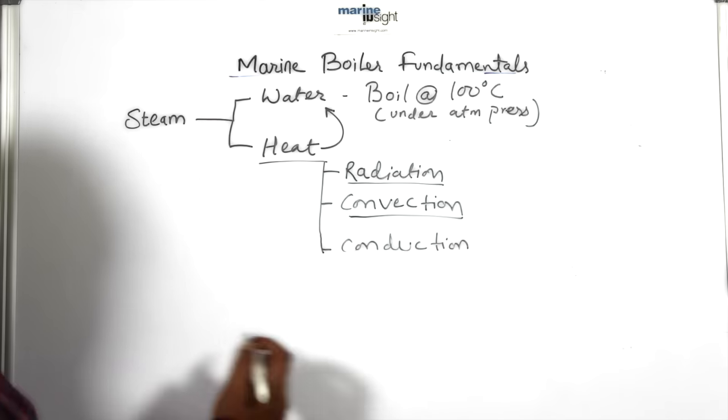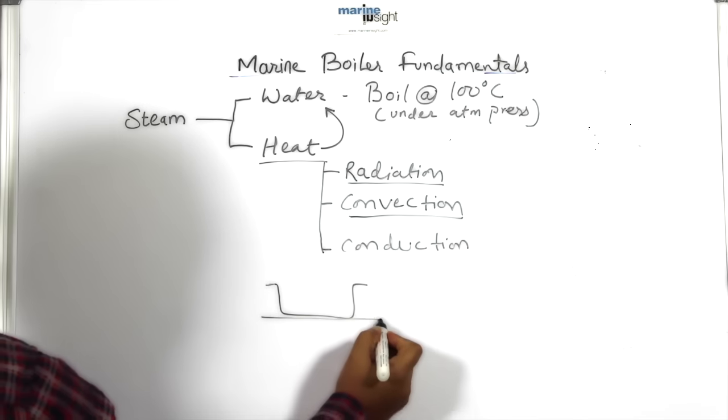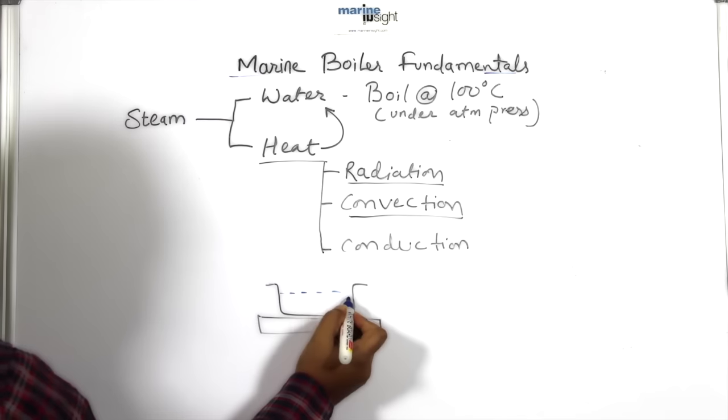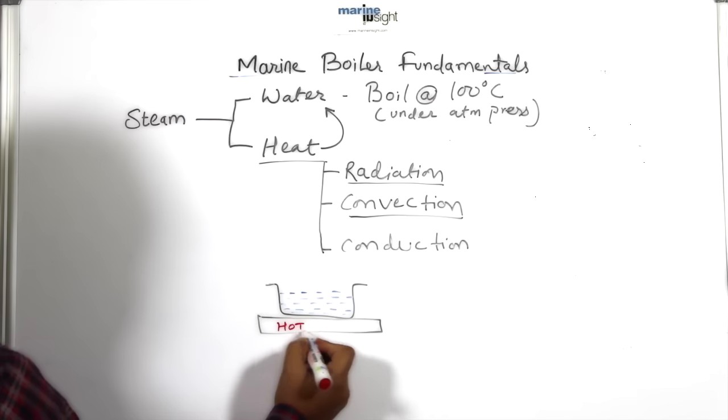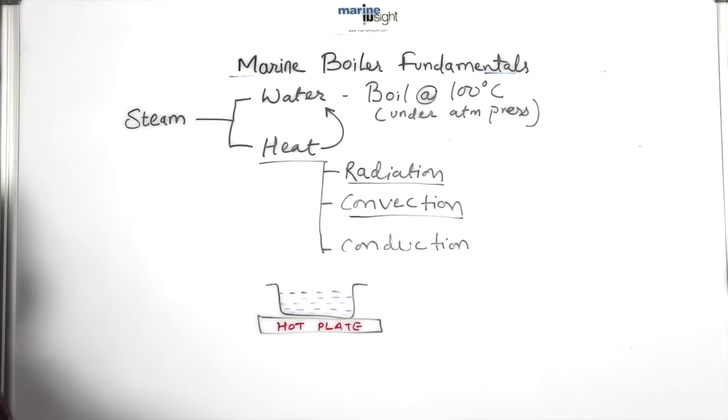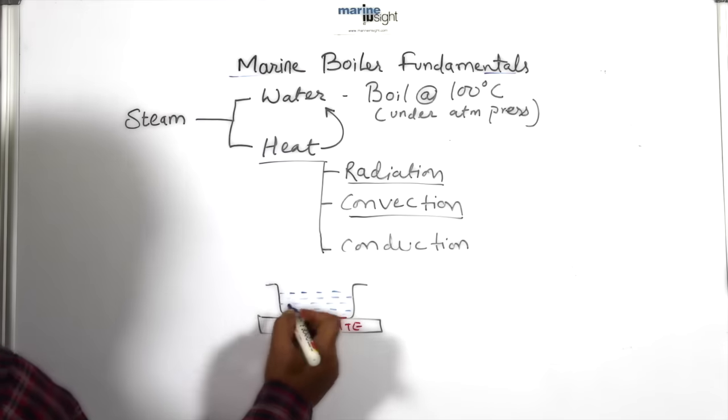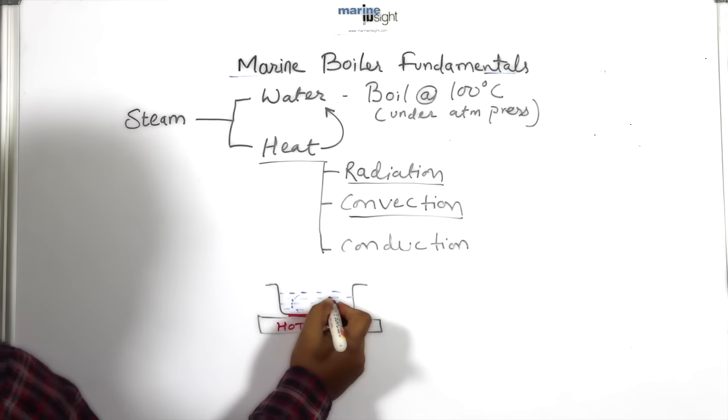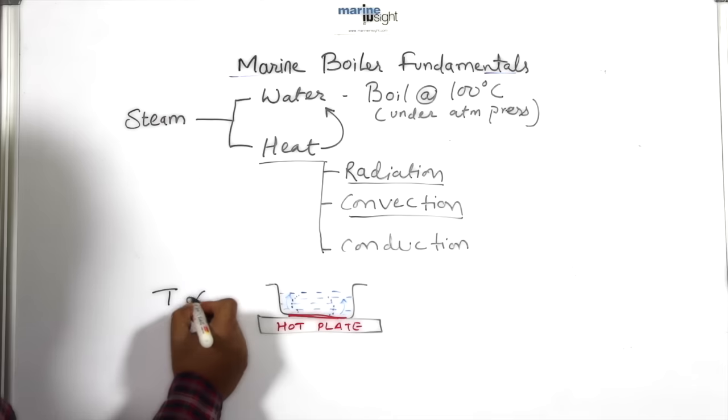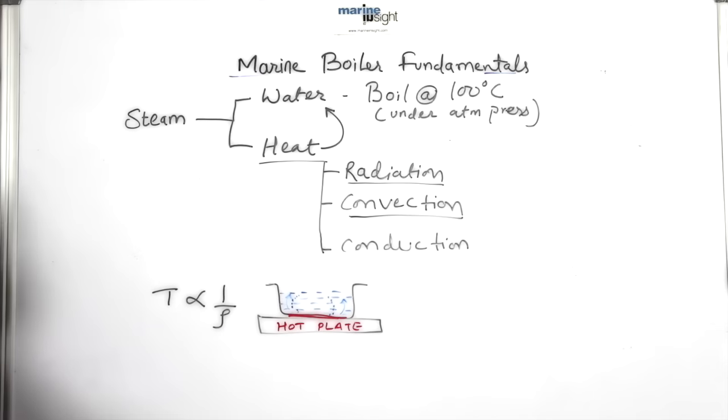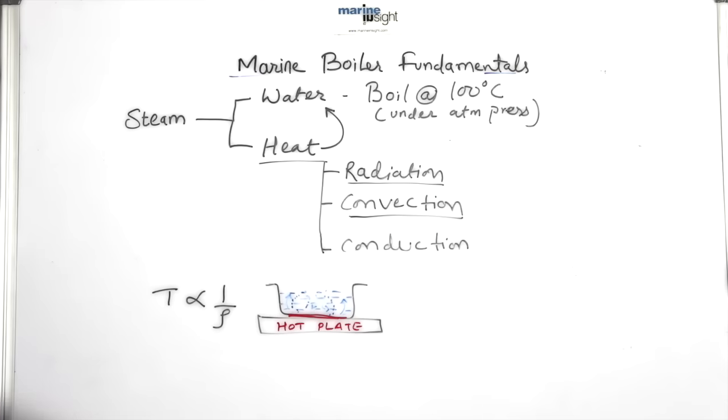Let's take an example to understand this. Take a beaker or container and fill it with water. Now keep this container on a hot plate. As we know, temperature is inversely proportional to density. Because of the heat supplied, the molecules at the bottom part of the beaker will be at higher temperature. The rise in temperature will decrease the density of these molecules and they will rise up, taking the place of cold molecules at the top. The cold molecules will then come down and get heated up from the hot plate.